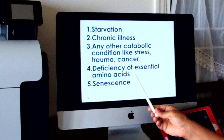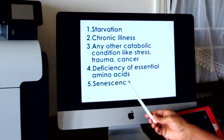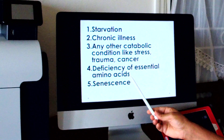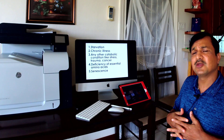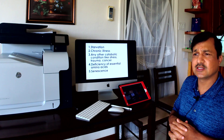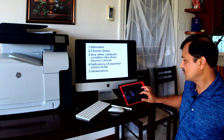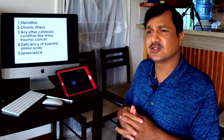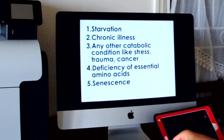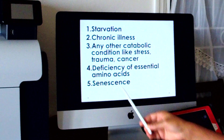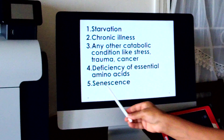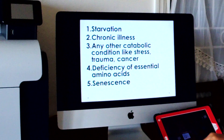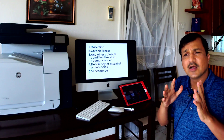Essential amino acid deficiency is another cause. Even a single essential amino acid deficiency can put a person into negative nitrogen balance. For example, methionine — whenever translation has to proceed, a new protein has to be synthesized, and you really need methionine because AUG (the initiator codon) requires methionine. When methionine is deficient, there will be breakdown of skeletal muscle to provide that methionine, leading to increased protein catabolism and negative nitrogen balance. Finally, senescence — the aging process itself puts a person into negative nitrogen balance because skeletal muscle proteins break down, amino acid nitrogen goes into urea formation, and the carbon goes into glucose or ketone body formation. These are the examples for negative nitrogen balance.